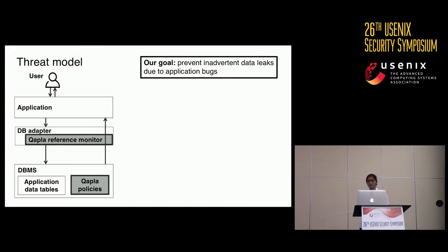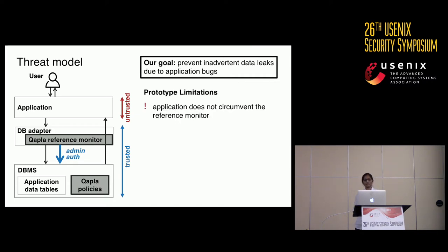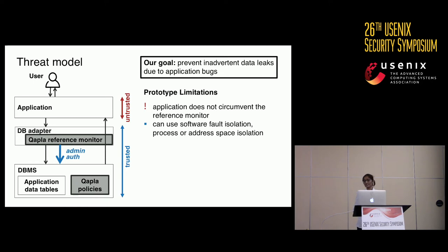Before proceeding with Kapla's design details, let me describe our threat model. Our goal is to protect against inadvertent data leaks due to application bugs. Therefore, we do not rely on the application to perform correct policy compliance checks, but we trust the rest of the software stack, including the database adapter, the Kapla reference monitor, and the database management system. The Kapla reference monitor authenticates with the database with administrative credentials and has the privilege to access all data tables. In our prototype, we trust the application to not circumvent the reference monitor, though this is not a fundamental limitation and can be addressed using fault isolation or process/address space isolation techniques.